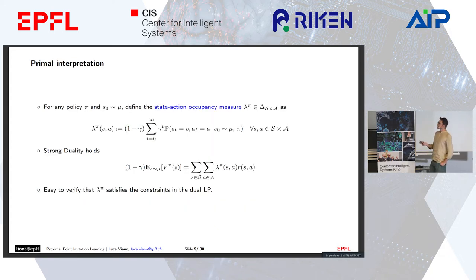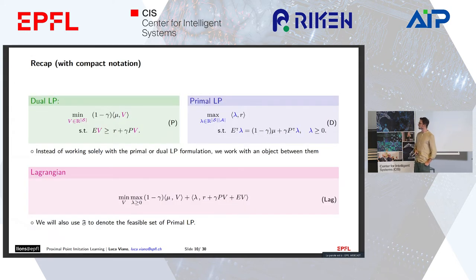We can see that all lambda satisfying the constraints can be written as a discounted sum of the probability of visiting a state action pair after t steps according to a policy pi. We can easily show that strong duality holds, so we're replacing the non-concave expression v pi with a linear objective in lambda. That's quite an attractive feature of the LP formulation.